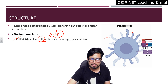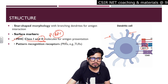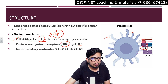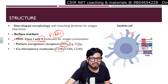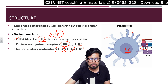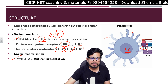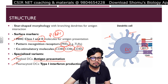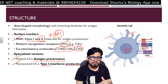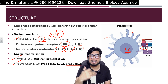The surface markers on a dendritic cell include MHC class 1 as well as MHC class 2, which is why we call them professional antigen presenting cells. Every nucleated cell has MHC class 1, and dendritic cells also have MHC class 2, with which they can showcase antigen to T cells. They also have pattern recognition receptors (PRRs) like Toll-like receptors for different pathogen patterns, and co-stimulatory molecules CD80, CD86, and CD40.